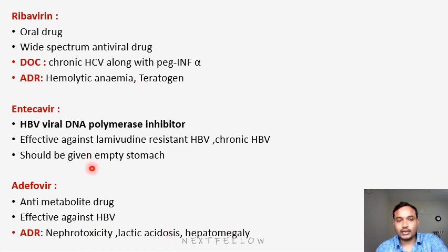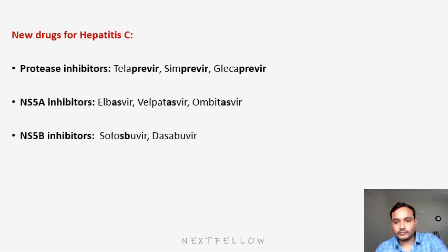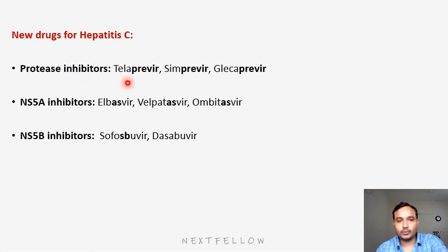These are the drugs regarding hepatitis B and hepatitis C. There are some exclusive drugs useful in hepatitis C virus, which we will see in the next slide. Coming to the new drugs for hepatitis C, there are three groups: protease inhibitors, NS5A inhibitors, and NS5B inhibitors. These drug names are a bit difficult to remember, so remember them by mnemonic. The protease inhibitors for hepatitis C all end with 'previr'.